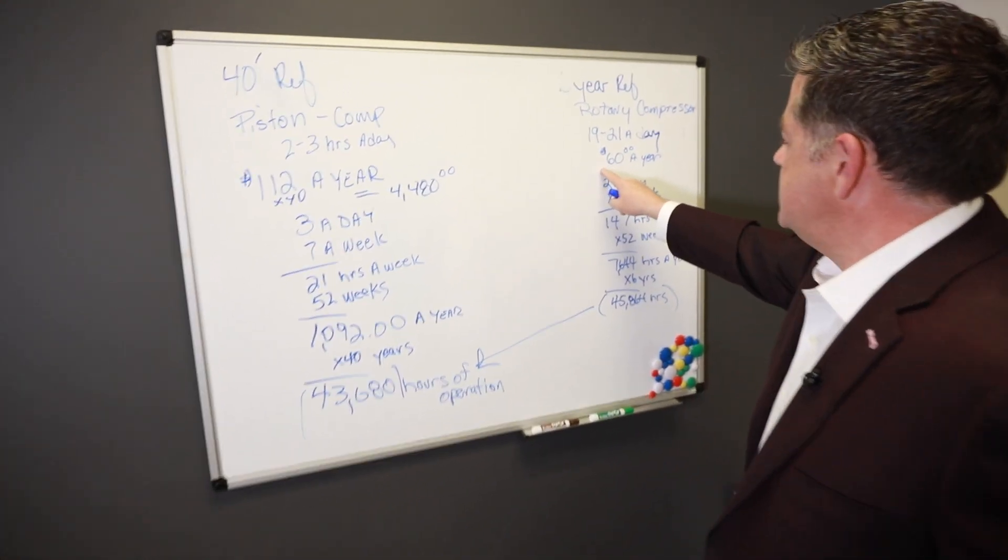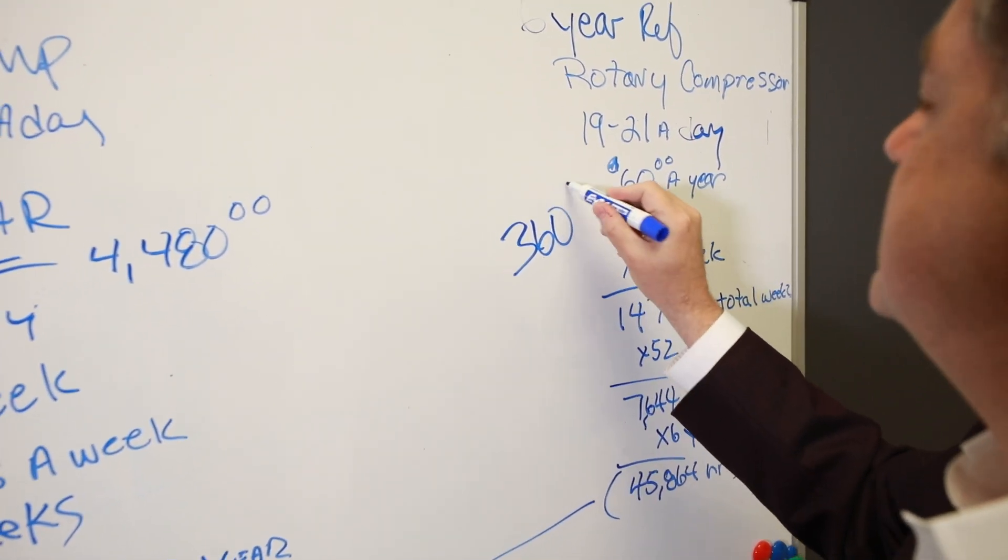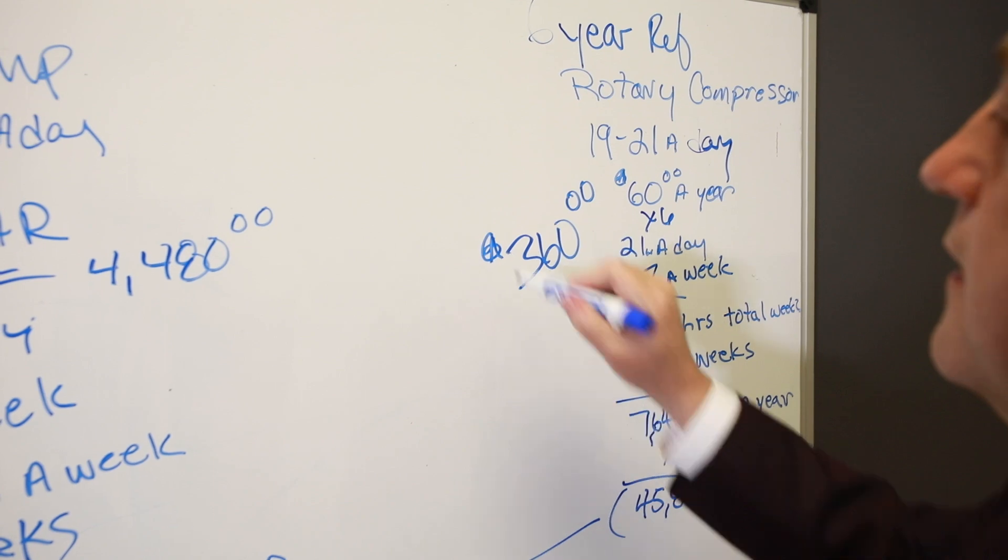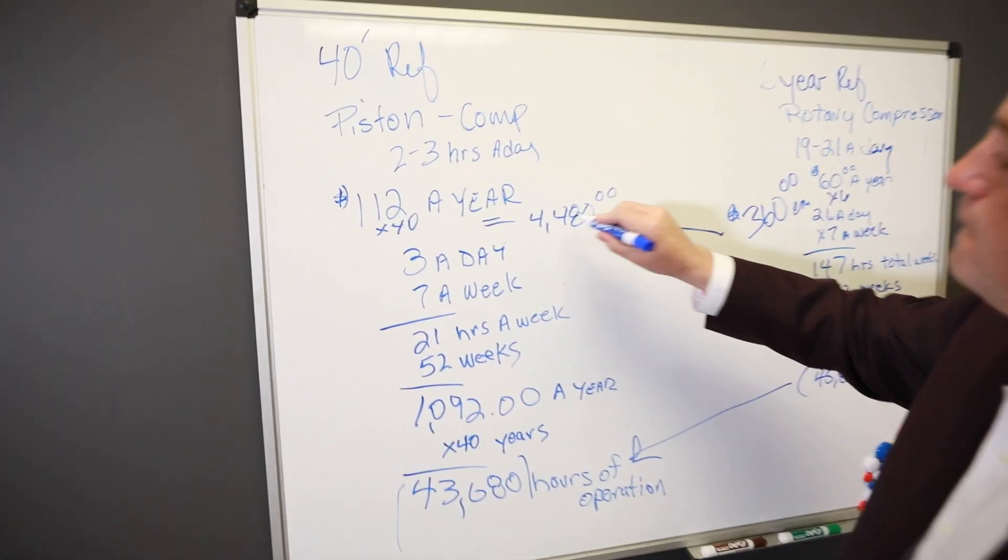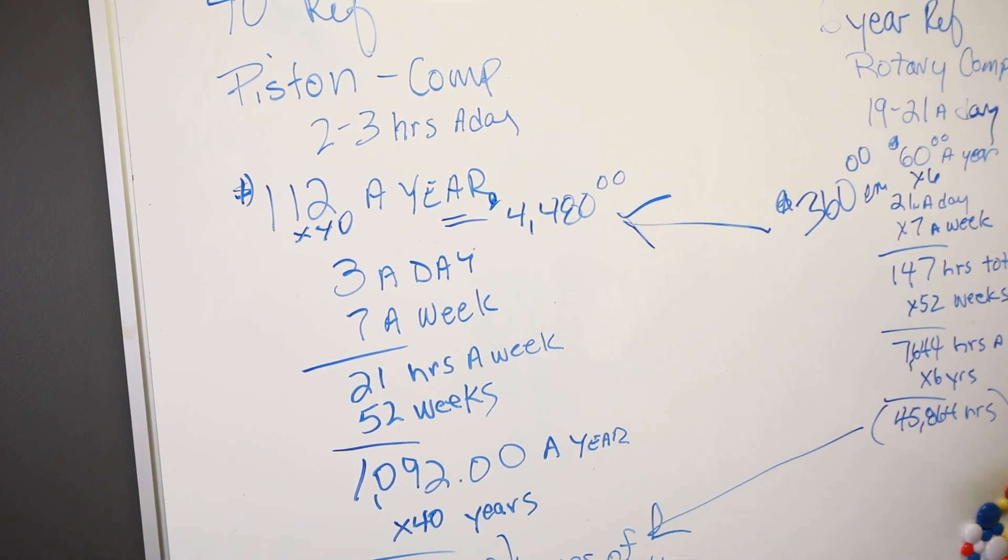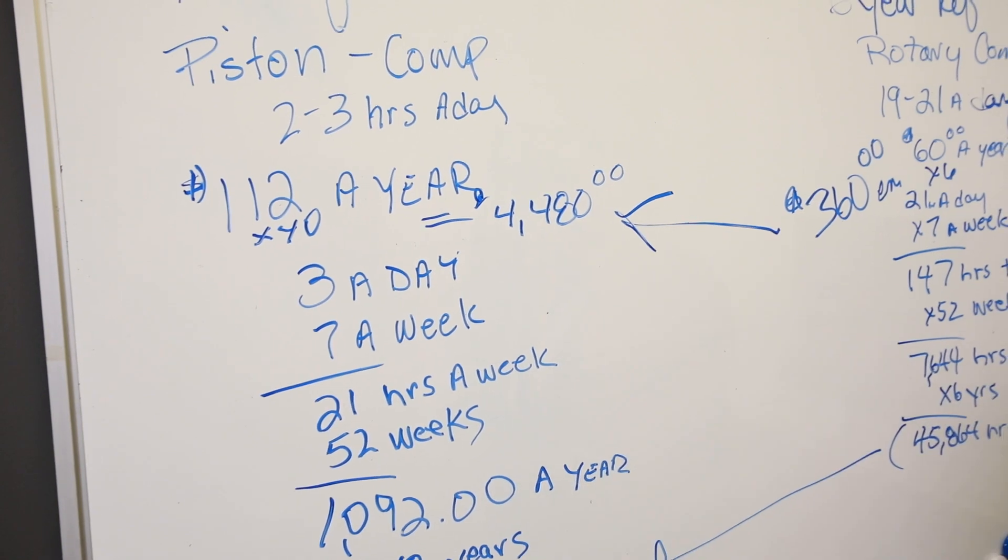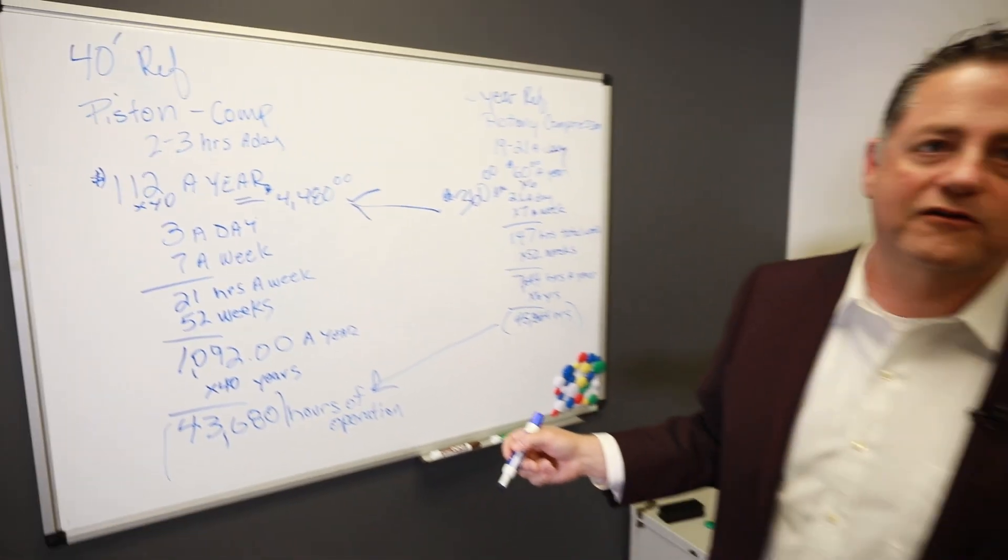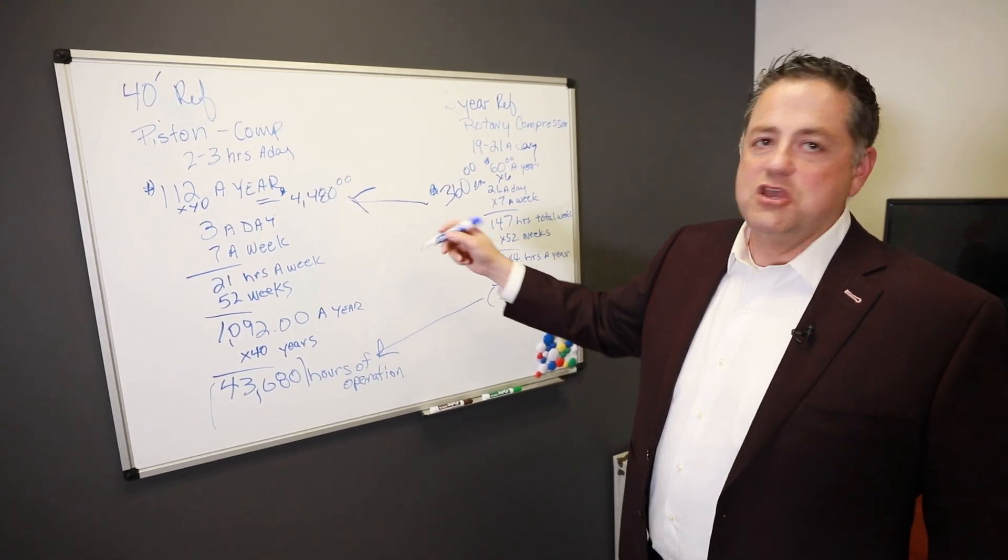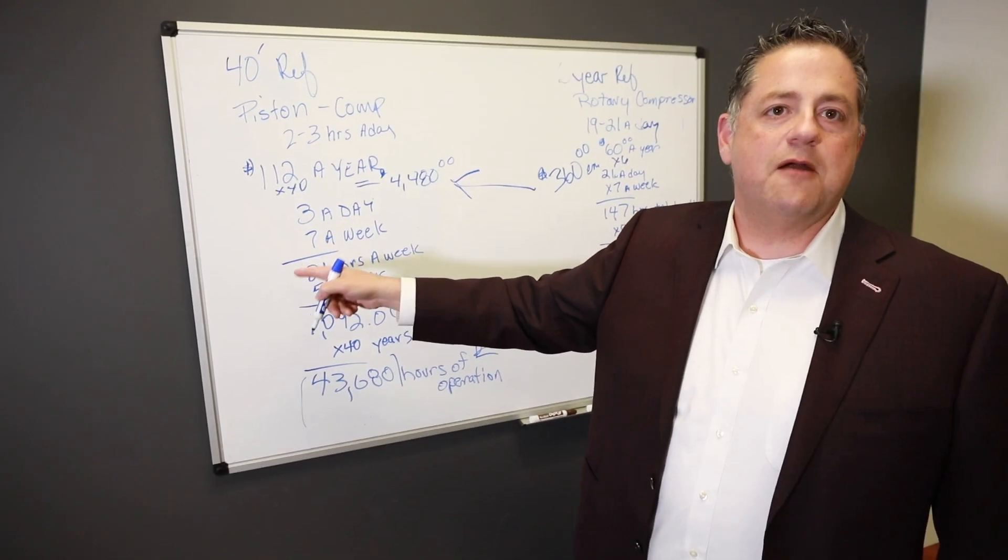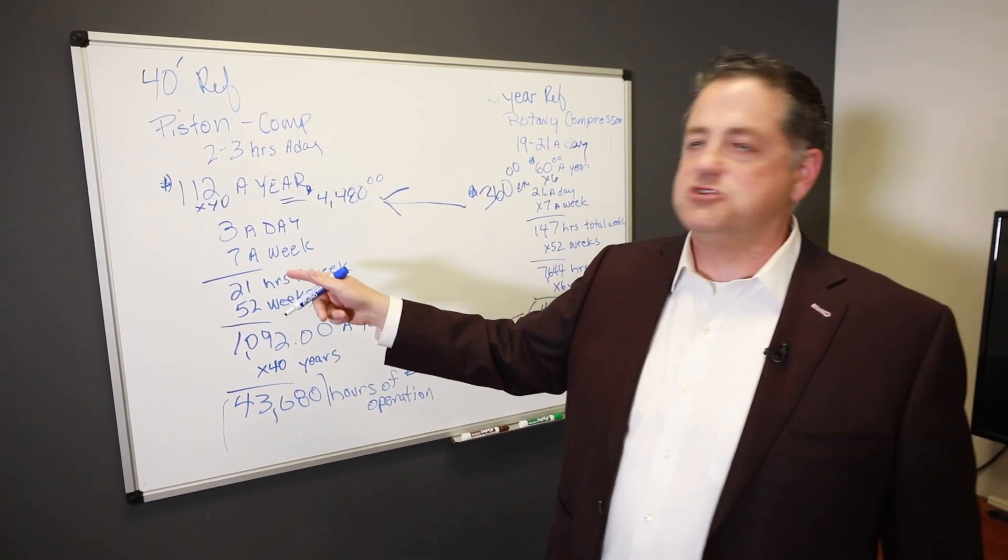The other thing to consider is, at $60 a year times six, this costs you $360 to operate in energy. Compare that to $4,480. And again, this is probably a low number because we're using just $112. So if I compare that, and you continue to use that refrigerator in the basement, you're going to be paying out-of-pocket a lot more in electricity.